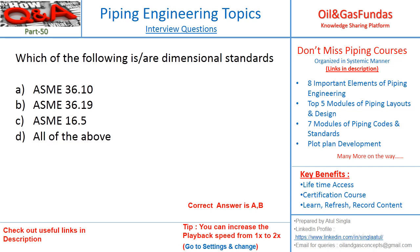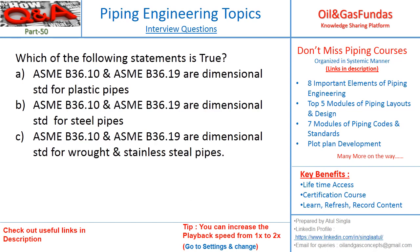36.10 is used for carbon steel and 36.19 is used for stainless steels. The next question: which of the following statement is true? A: 36.10 and 36.19 are dimensional standards for plastic pipes. B: 36.10 and 36.19 are dimensional standards for steel pipes. C: 36.10 and 36.19 are dimensional standards for carbon and stainless steel pipes. D: 36.10 is for carbon steel and 36.19 is for stainless steel.